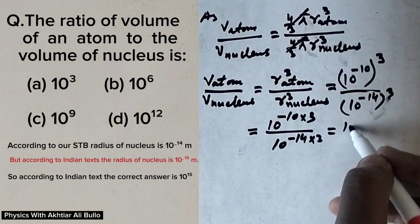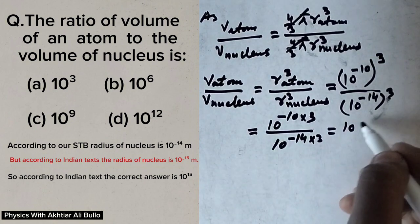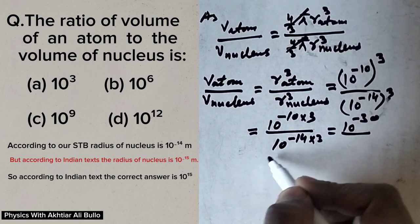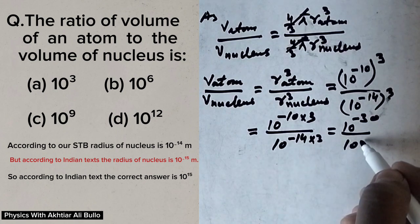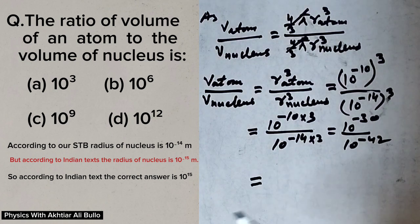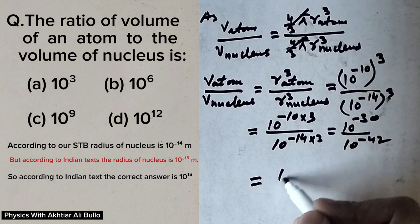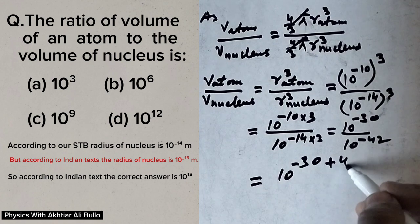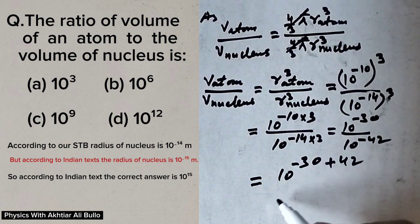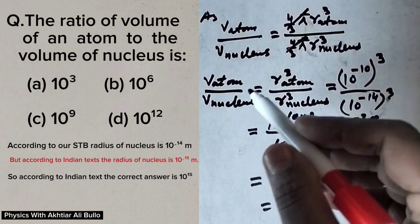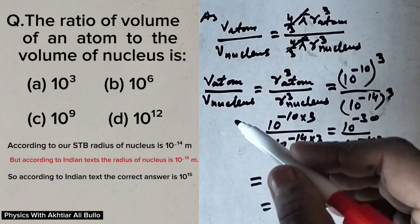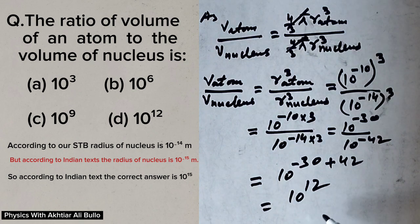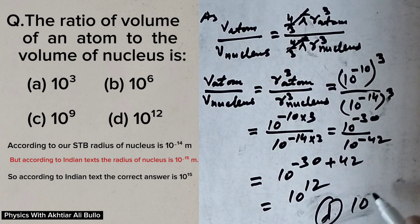So the ratio of volume of atom to volume of nucleus will be 10 raised power minus 30 divided by 10 raised power minus 42. Taking minus 42 to the numerator gives minus 30 plus 42, which equals 10 raised power 12. So the correct option is D: 10 raised power 12.